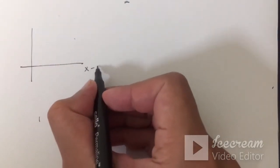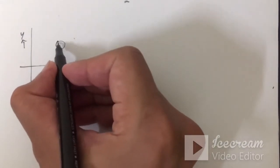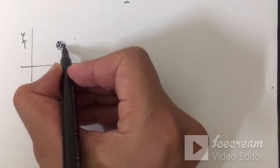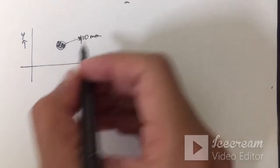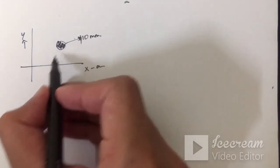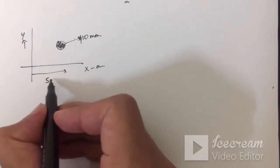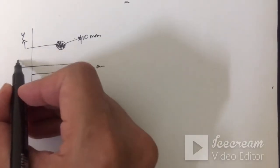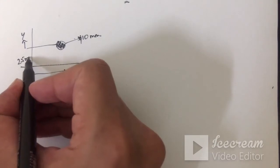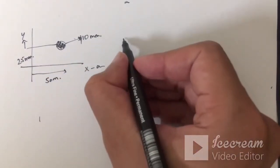So I will consider this example. Suppose this is an assembly and let's say this is x-axis, this is y-axis and we have a pin here of 10 mm diameter and this hole is 50 mm from the y-axis, this length is 50 mm and 25 mm from the x-axis and we have a cuboid here.